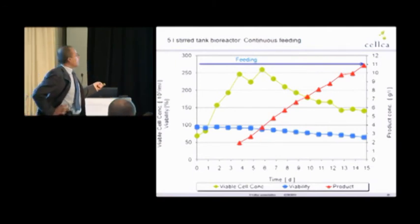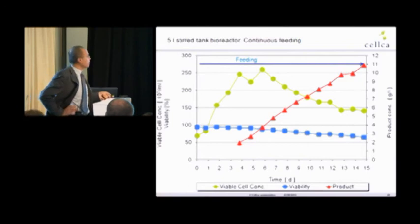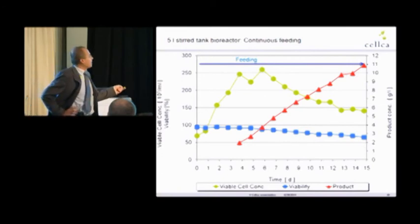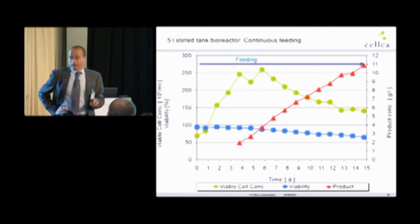We inoculate the cells higher, and the cells grow to 2.5 times 10 to 7, again to the same final cell concentration. And the cell viability seems to be a bit maybe higher, 60% or whatever, in the end of the process. And the product concentration is 11 grams per liter.